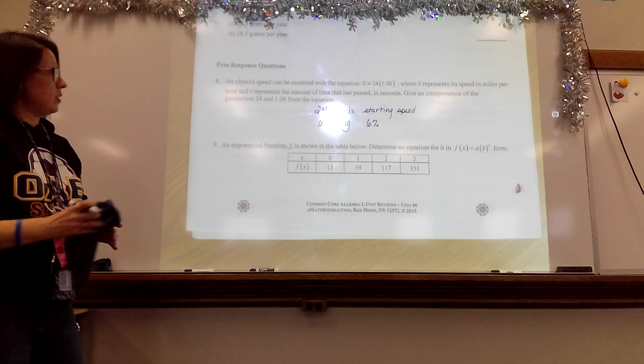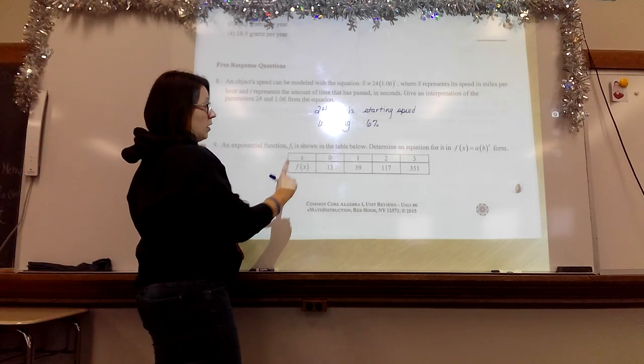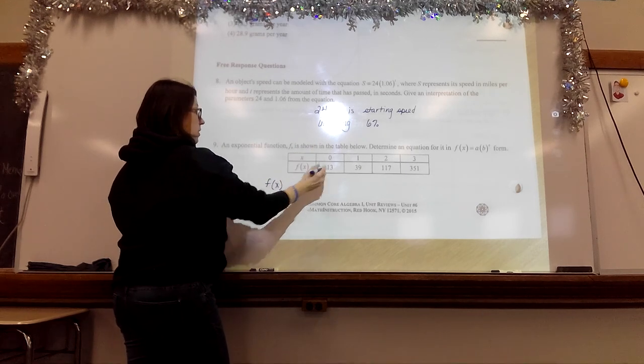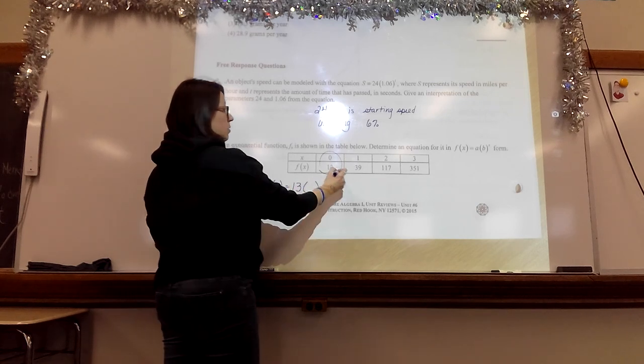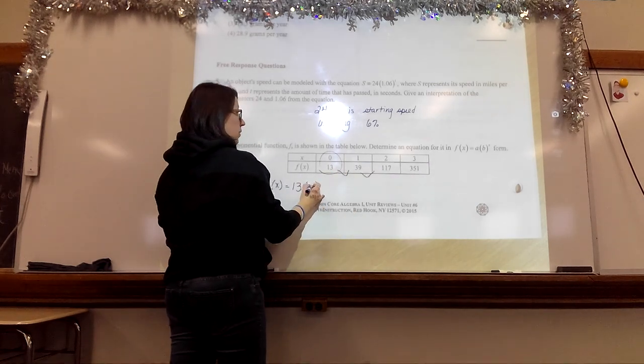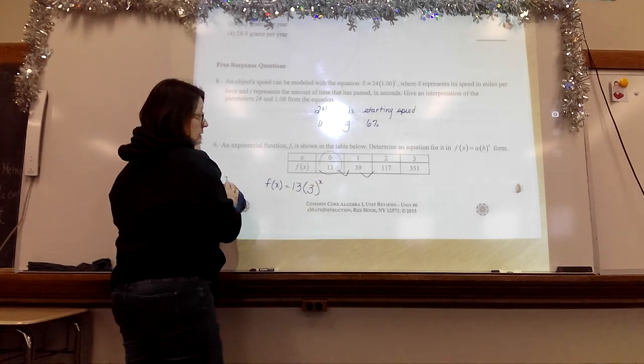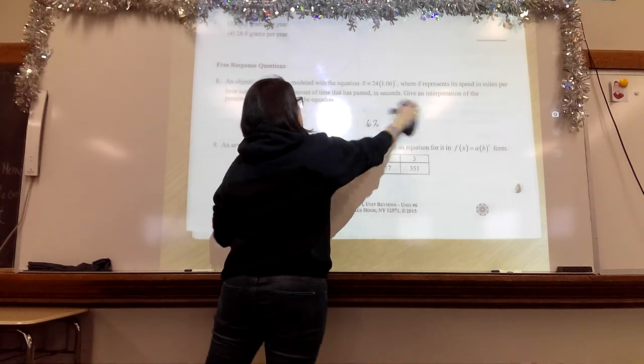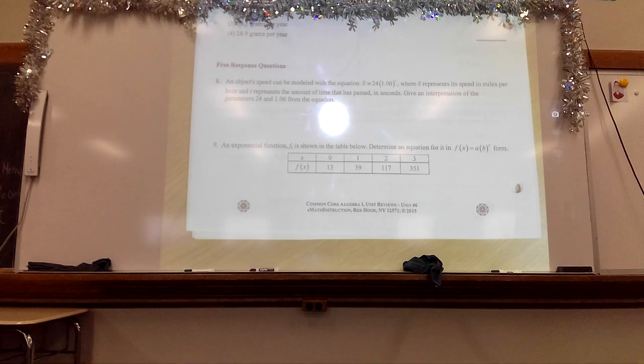Number 9, an exponential function f is shown in the table. Determine the equation for f of x equals a times b to the x form. The a is the starting amount right there. The b is the growth factor. What's happening each time? It's multiplying by 3 to the x. That one's done. That easy, that quick.